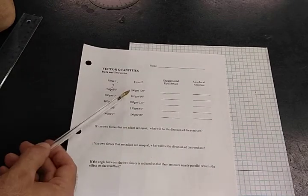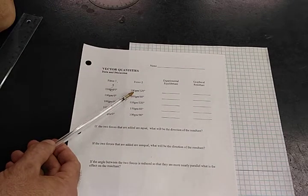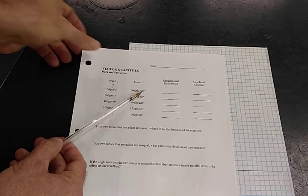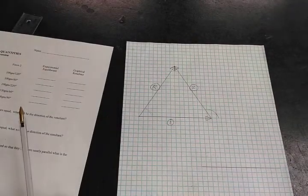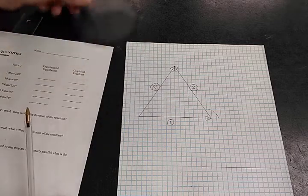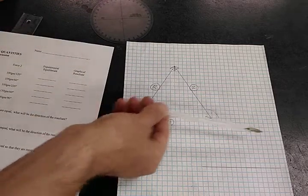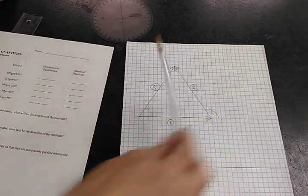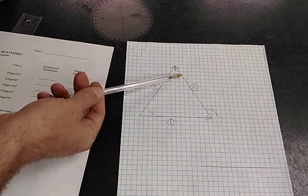Now I want to add the second vector, which is also going to be 10 centimeters long, and it's at an angle of 120 degrees. Using my protractor here, I was able to determine 120 degrees is up like that, and I'm also going to make that 10 centimeters long.